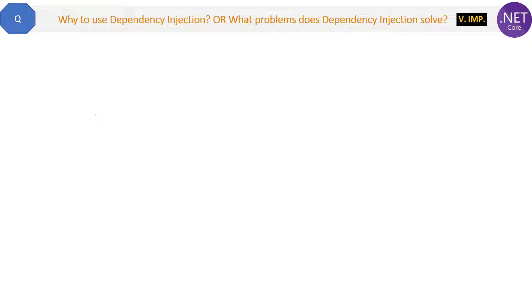Here is the next question: Why use dependency injection, or what problem does dependency injection solve? In the previous question we saw the definition of dependency injection. In this question we will see why we need it, and in the next question we will see how to implement dependency injection.